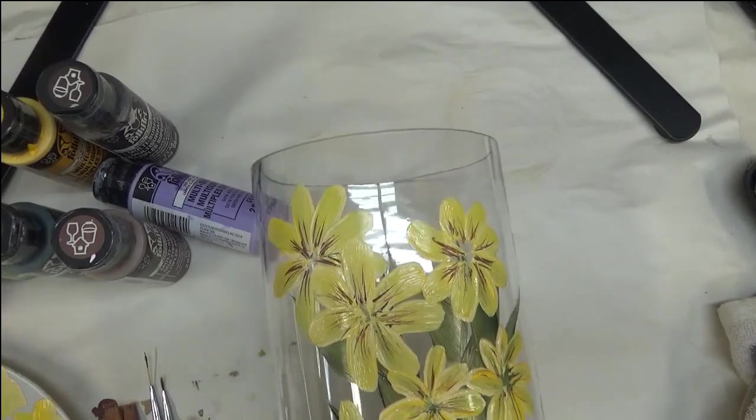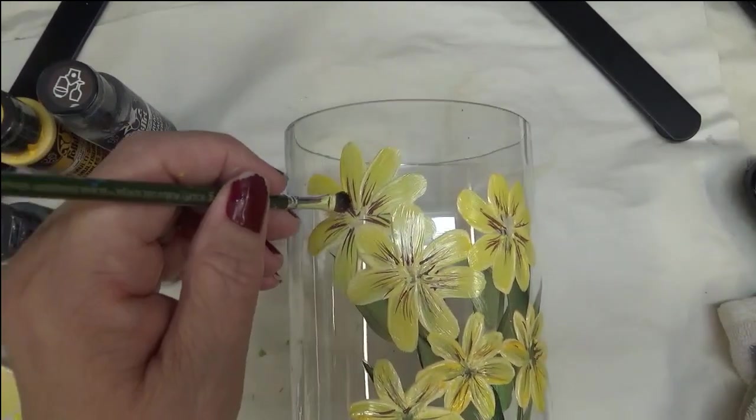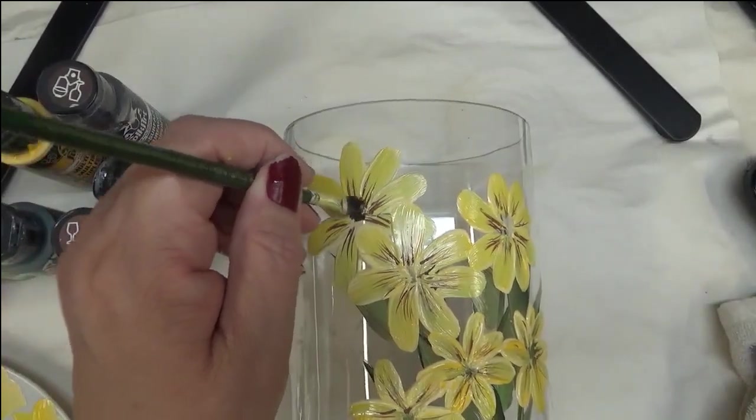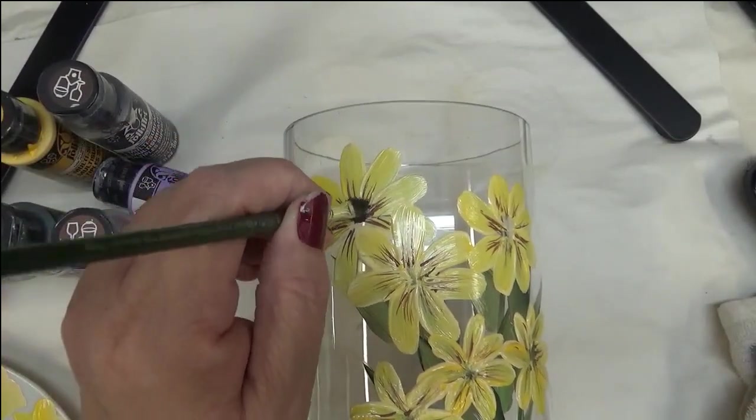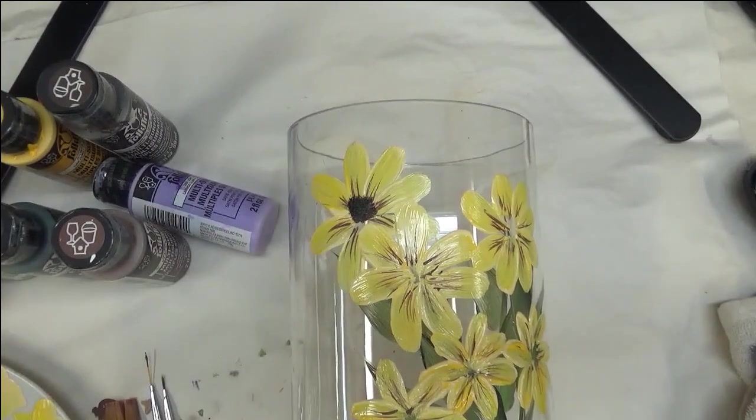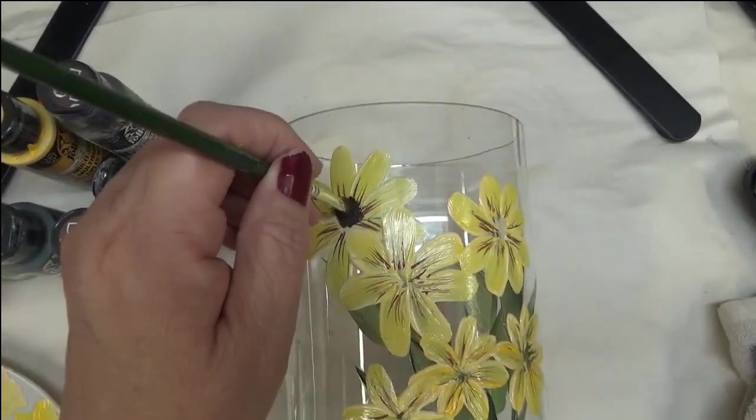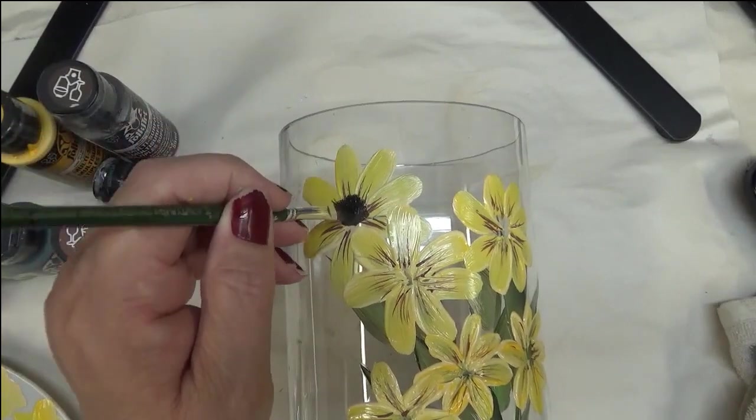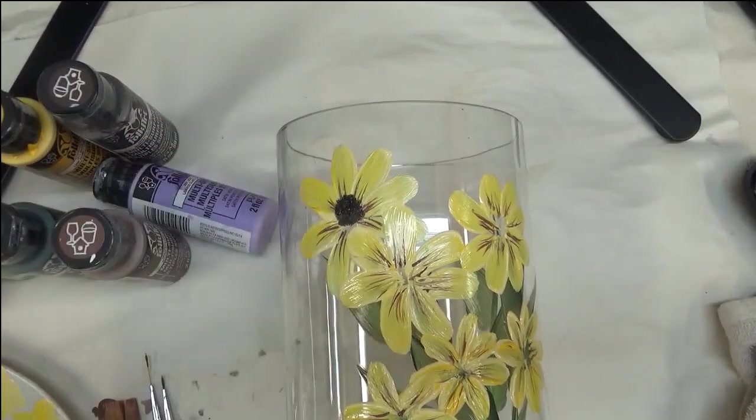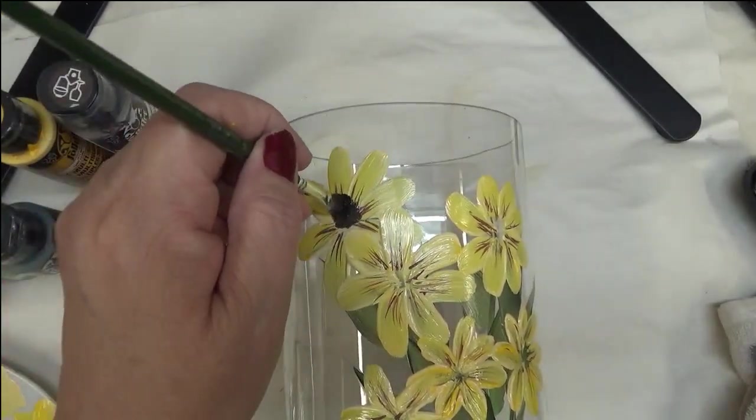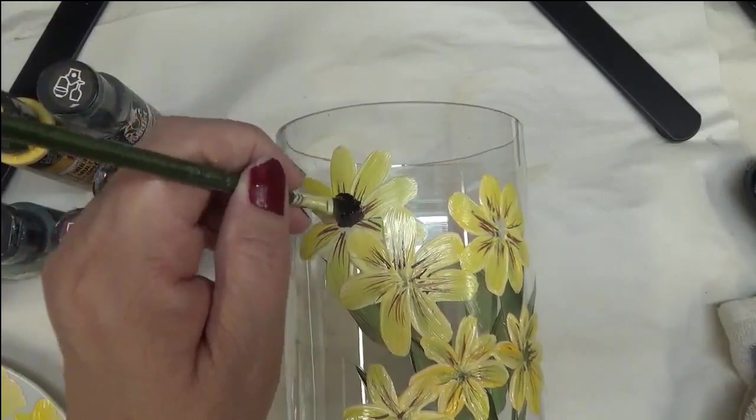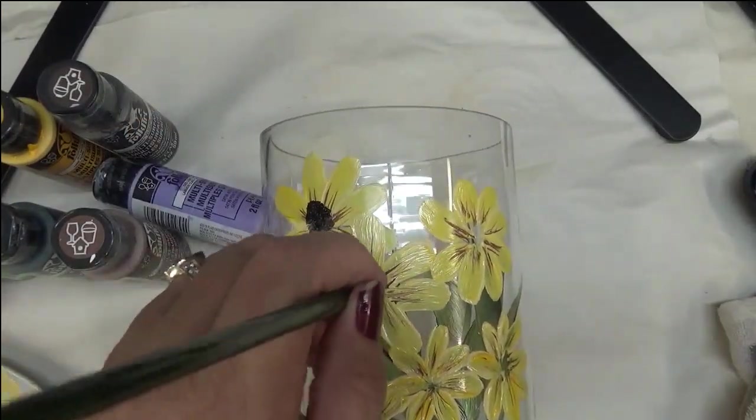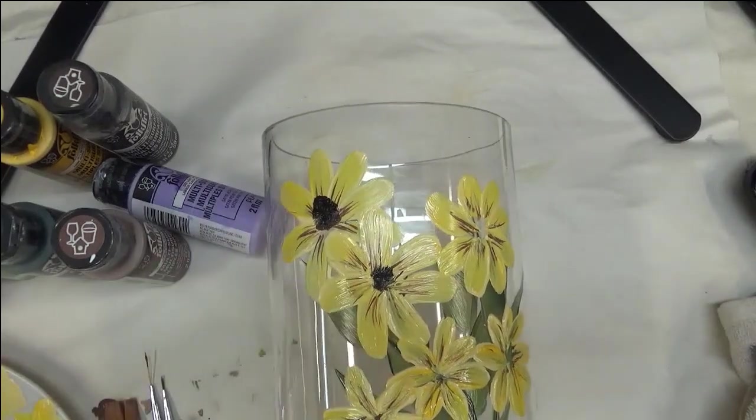I have black and I have the real brown. I'm going to use my scruffy brush and I am going to tap in the centers. Now you can make it to where it's rounded, or you can come up a little bit. Sometimes they have more of a cone shape. It's up to you.